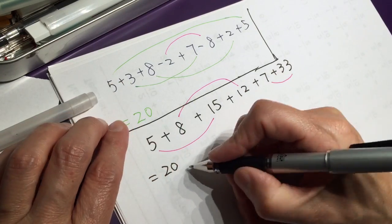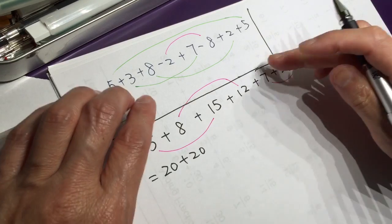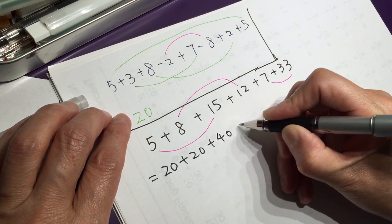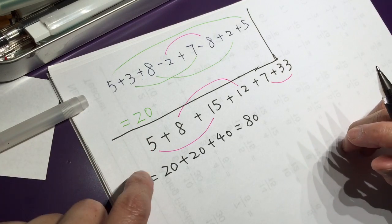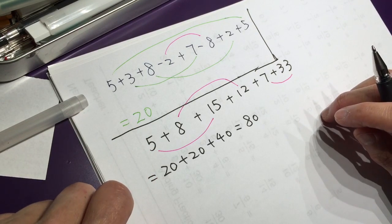So this is 20 plus 20 plus 40 all together equals 80. So you try to find number bonds.